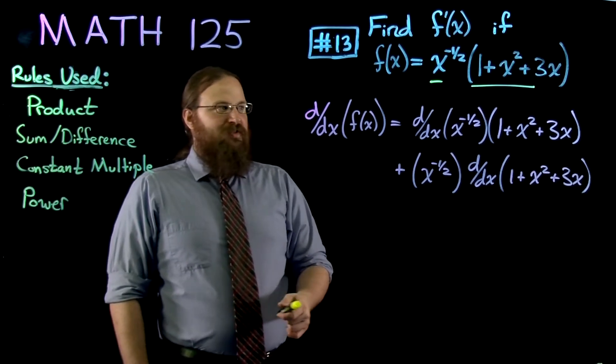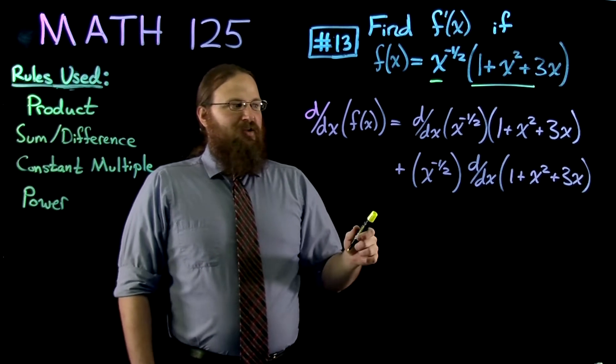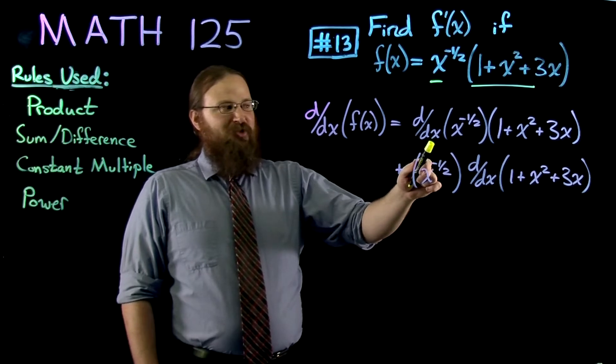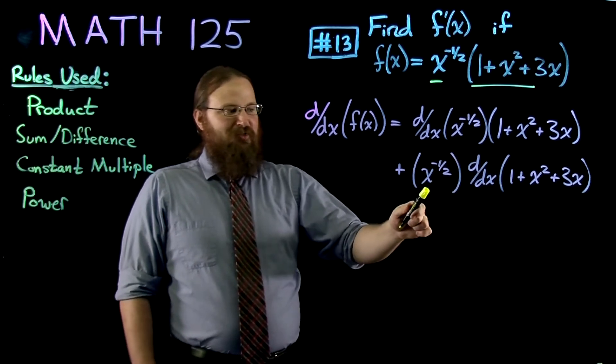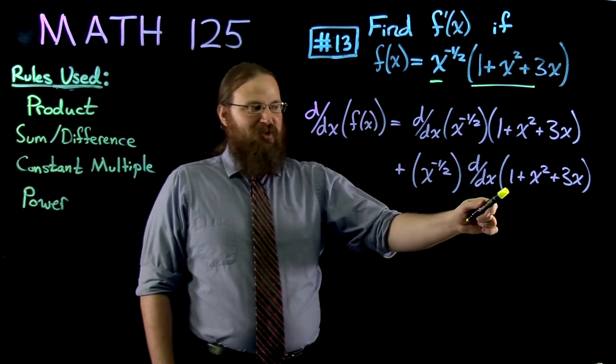Now we use the product rule, taking the two terms. Taking the derivative of the first term, leaving the second alone, then leaving the first expression alone and taking the derivative of the second.